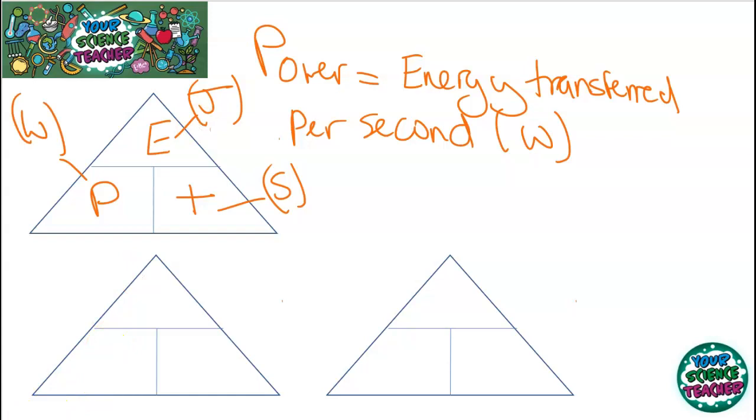For example, if a radio is a 50 watt radio, it's transferring 50 joules of energy in a second. Now often you're not given in an exam question the energy and time. Often you're given the fact that power equals voltage times current. So often you're given a voltage and a current for a circuit and you have to calculate the power from that.